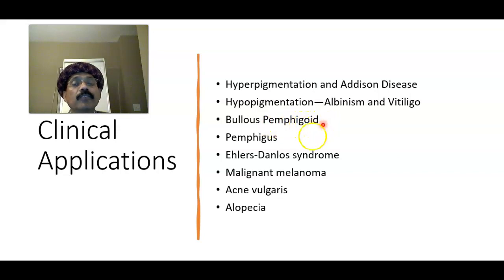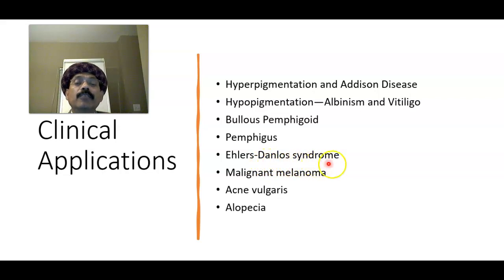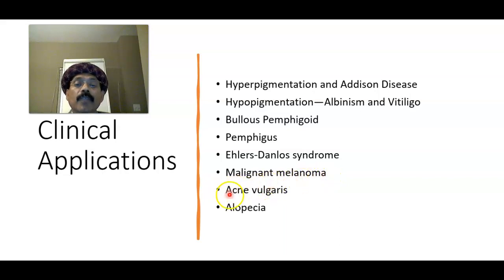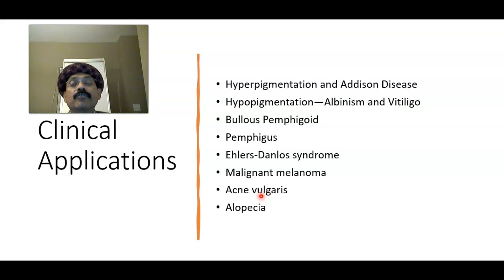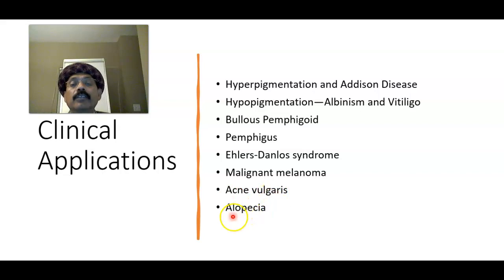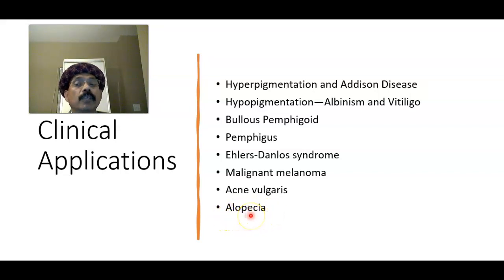In pemphigus there is disruption of the desmosomes in the stratum spinosum layer. Ehlers-Danlos syndrome is a problem with collagen in the dermis. Malignant melanoma is a malignant cancer of the melanocytes. Acne vulgaris occurs when there is excessive accumulation of sebum in the sebaceous gland around the hair follicle. Alopecia is loss of hair — it may be due to the aging process, male hormone action, or an adverse effect of chemotherapeutic medication.